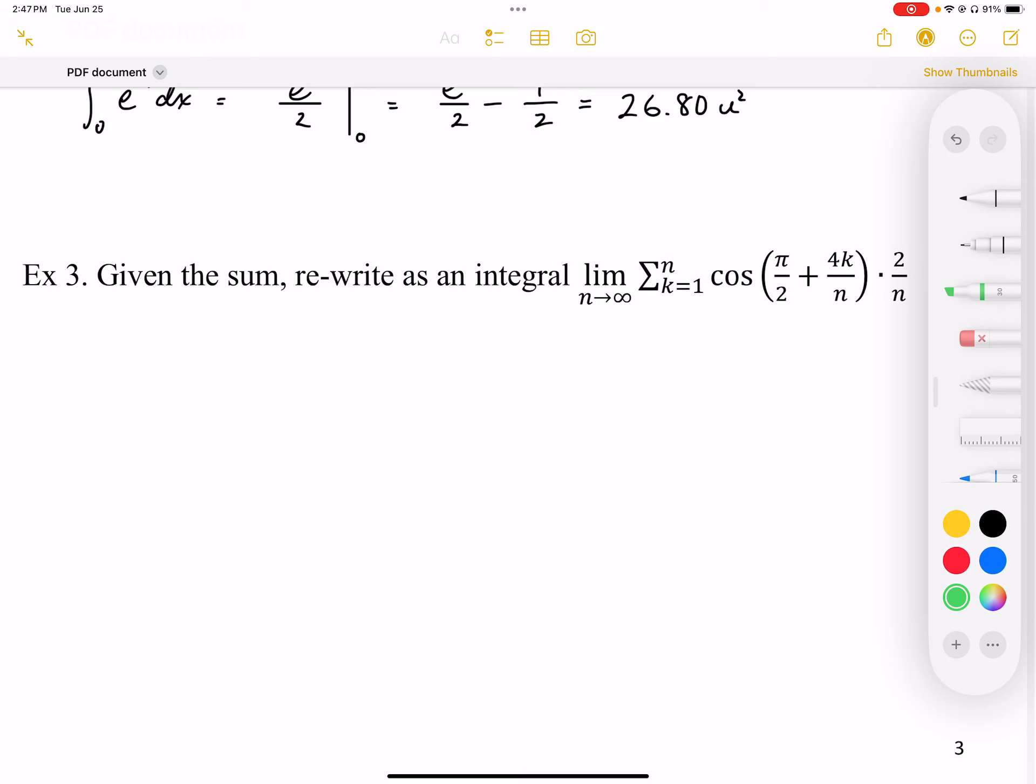So what we want to do is we want to establish firstly our dx, our delta x, which is our dx when we let the limit go to infinity.